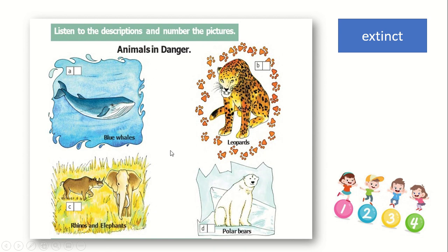Listen to the description and write the numbers. Description number one: this animal is black and orange; it is in danger because some people kill it for its fur. Which one? Tiger — well done! This is number one. Description number two: this animal is white; it is hunted by people for sport and for its fur. Which one? Polar bear — well done, excellent! This is number two.